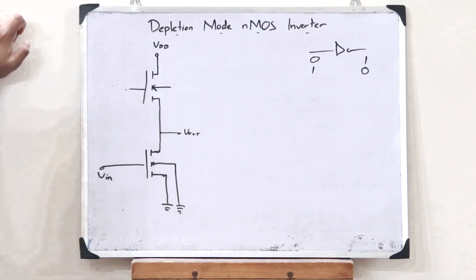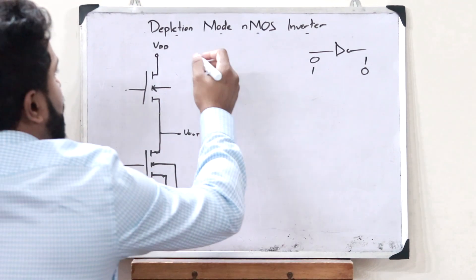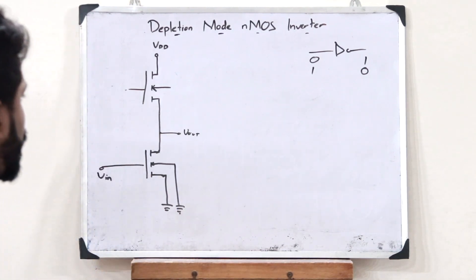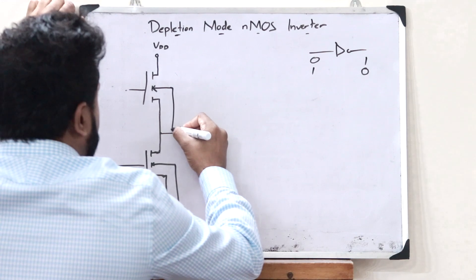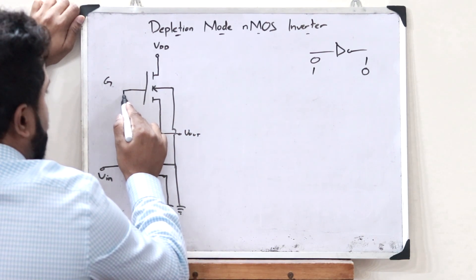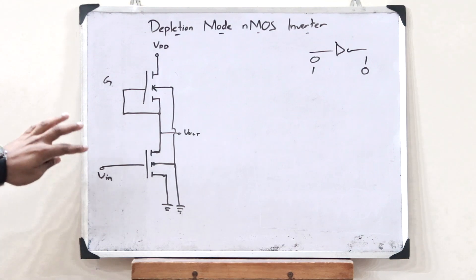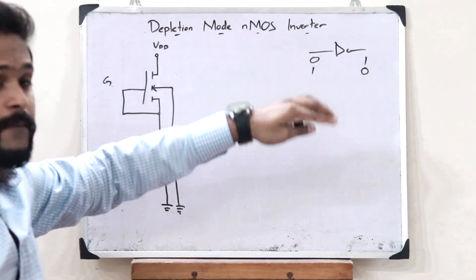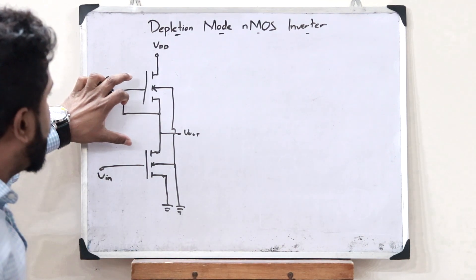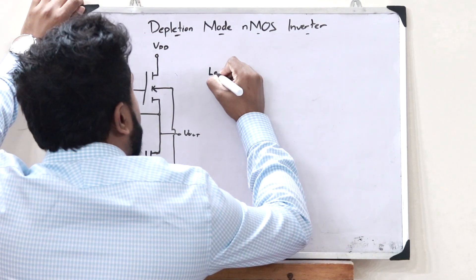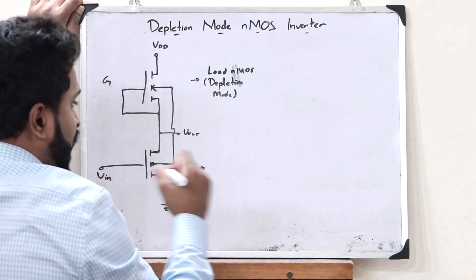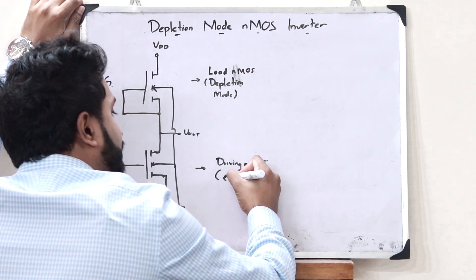The main thing we have to notice here is that this particular NMOS is in the depletion mode, whereas this particular NMOS is in the enhancement mode. What we observe is that this is also grounded. This is the gate terminal and this is the source, so the gate and the source are shorted. This is a depletion mode NMOS inverter. There are two NMOS transistors: this is the load NMOS transistor and it is in the depletion mode, whereas this is the driving NMOS transistor and this transistor is in the enhancement mode.